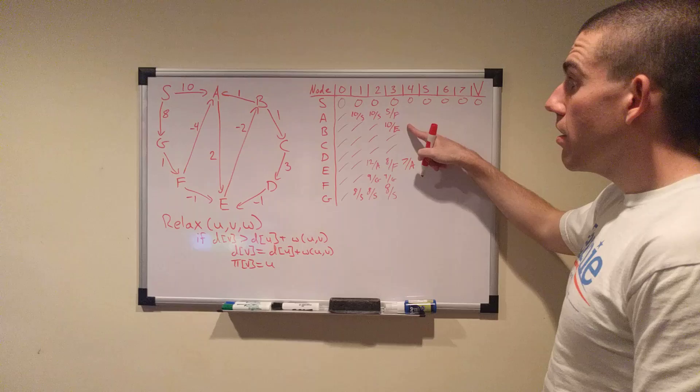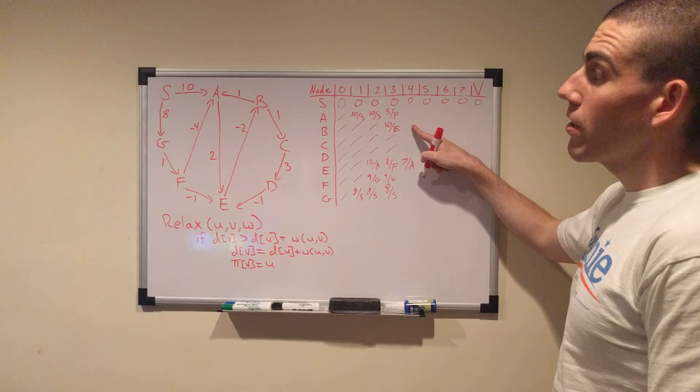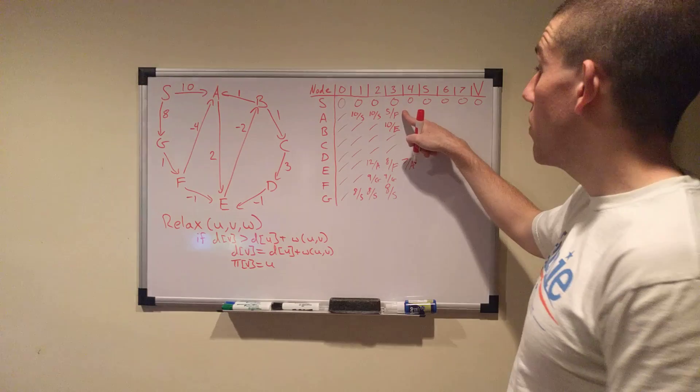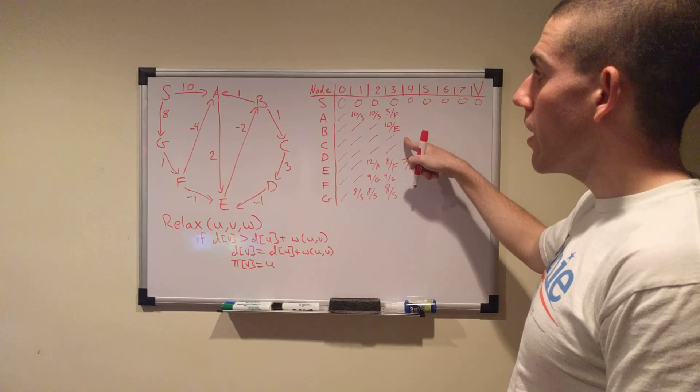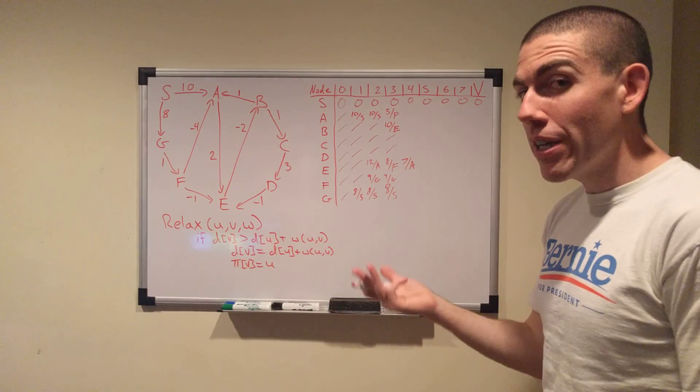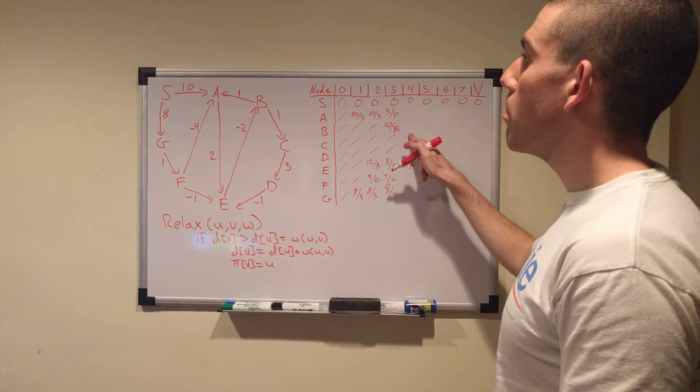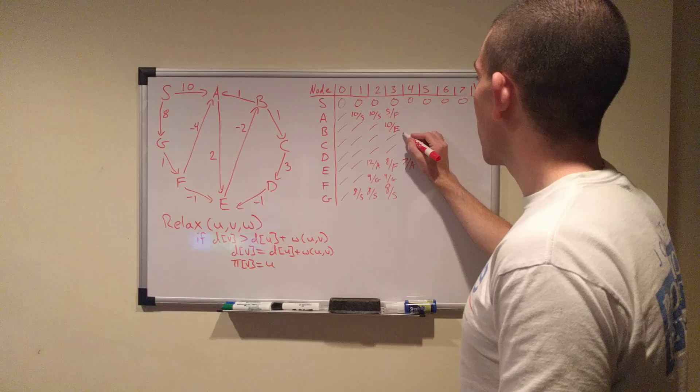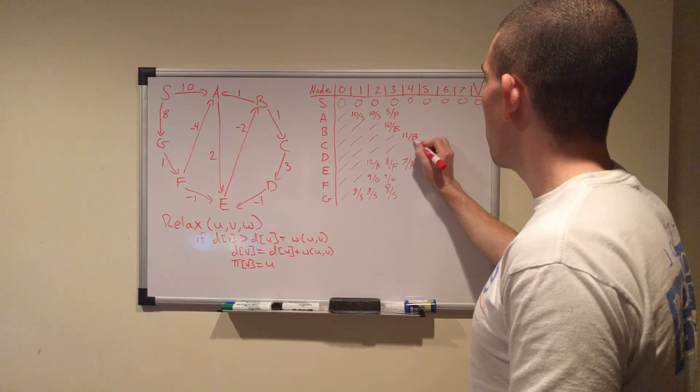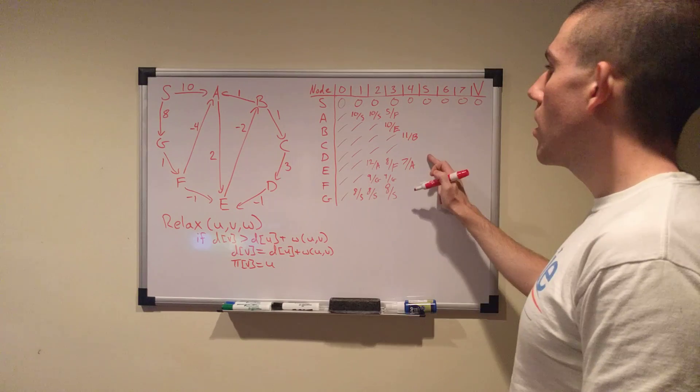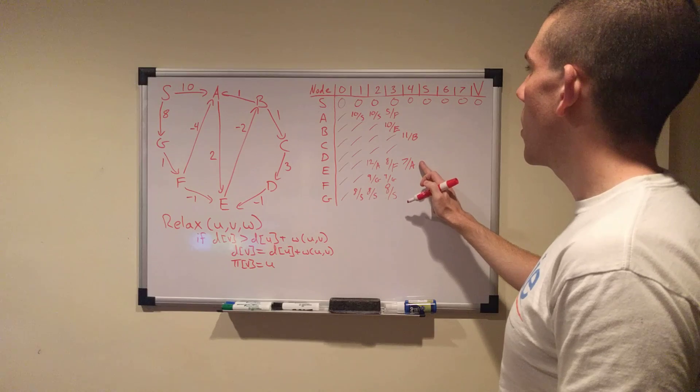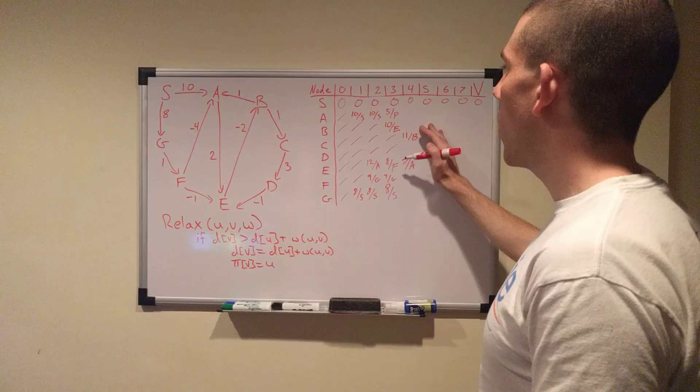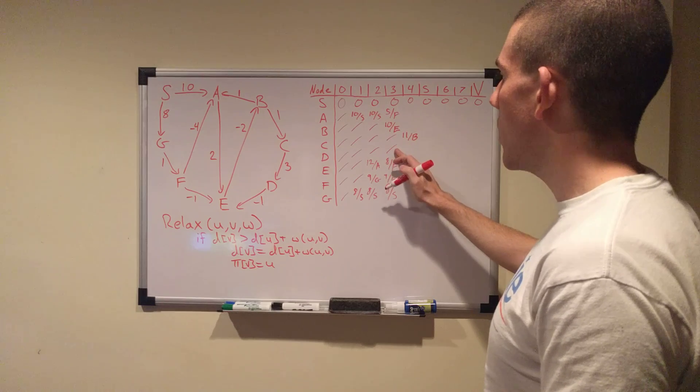B now has data. So, it has a cost of 10. It can go to A for a cost of 11, which does not beat A's current 5. We leave it alone. B can go to C. C has nothing there. Whatever B can offer will be better than infinity. So, we know that B has a cost of 10, 10 plus 1 is going to be 11. So, you can get here at a cost of 11 from B. And that's B's only outgoing edge that we care about. So, we move on.